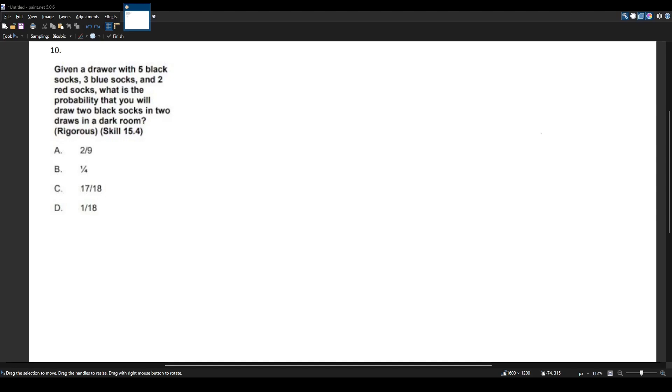Okay, so we have a probability question here for the MCAT CST multi-subject exam. Given a jar with five black socks, three blue socks, and two red socks, what is the probability that you will draw two black socks in two draws in a dark room?